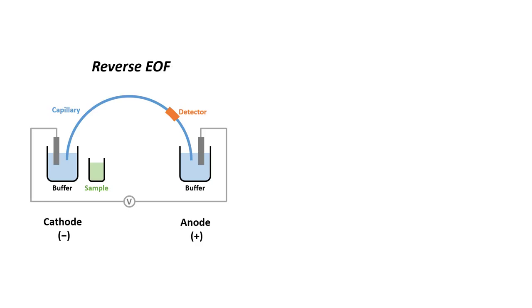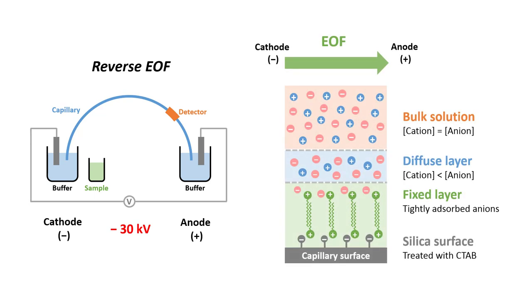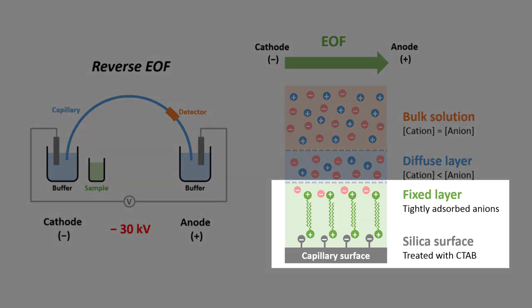To recap, in order to reverse the electro-osmotic flow, first of all, we need to apply a negative voltage across the capillary. Secondly, we need to add an optimal amount of electro-osmotic flow modifier, such as CTAB, into the buffer solution to make the capillary surface positively charged.